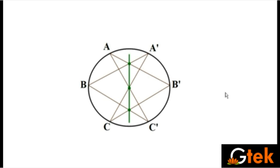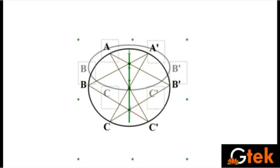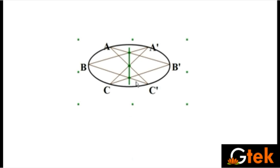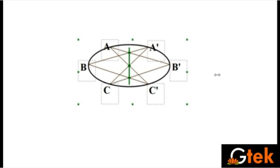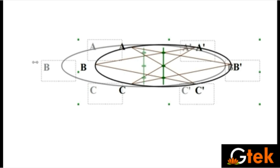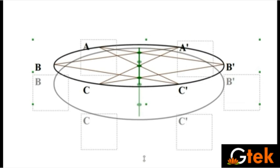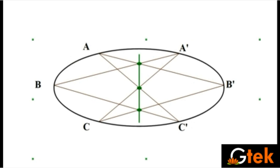As I vary the radius of the circle, the three intersection points still remain on the same line. This demonstrates that the three non-parallel line pairs always generate collinear intersection points.